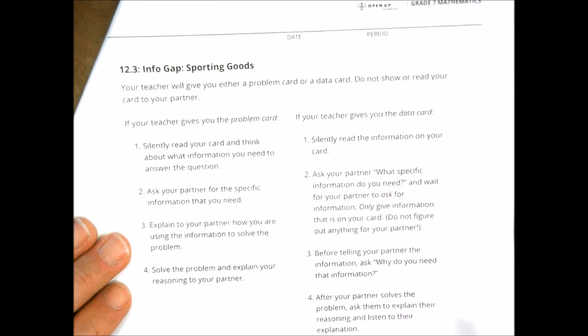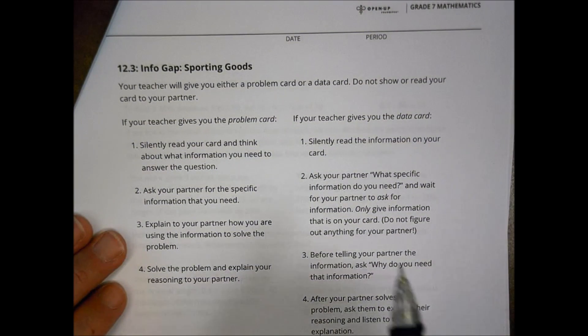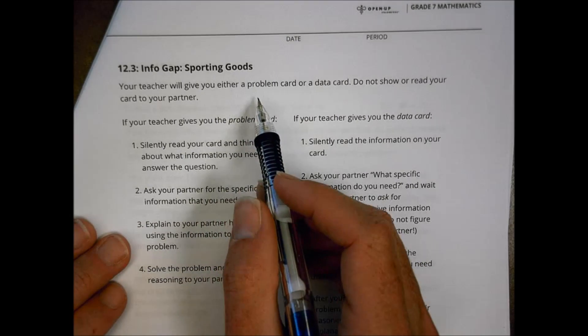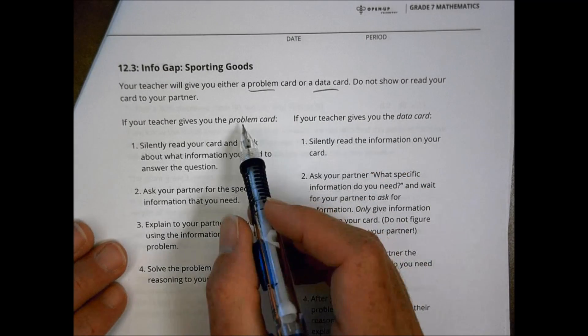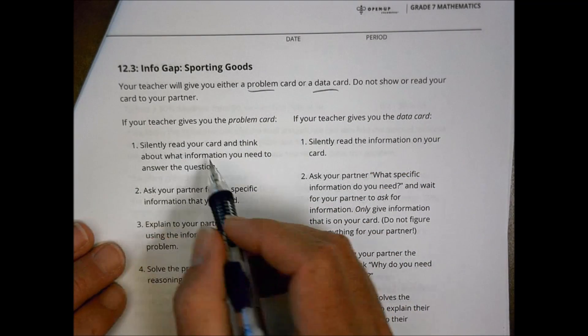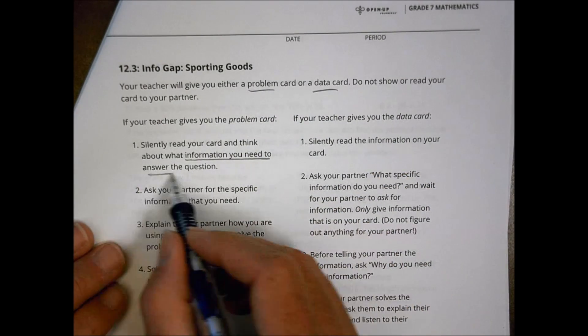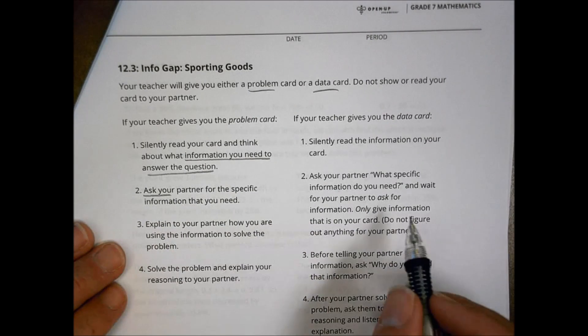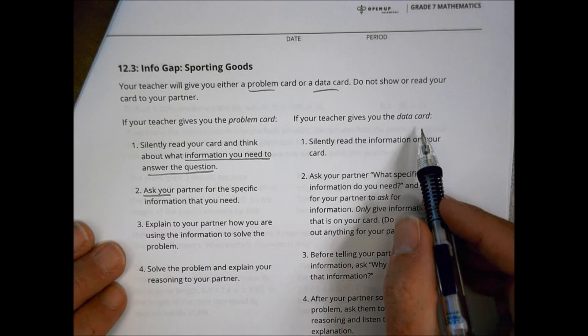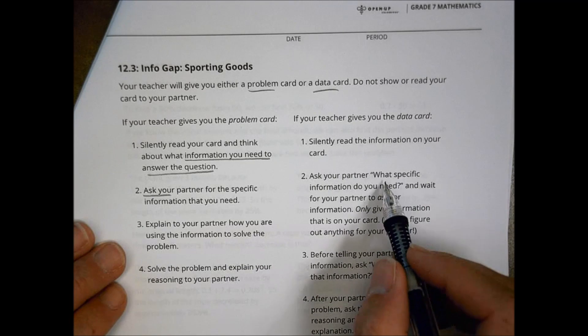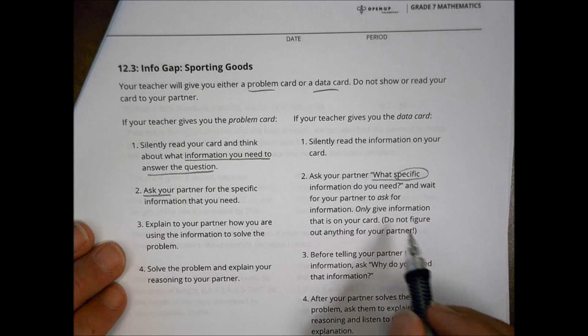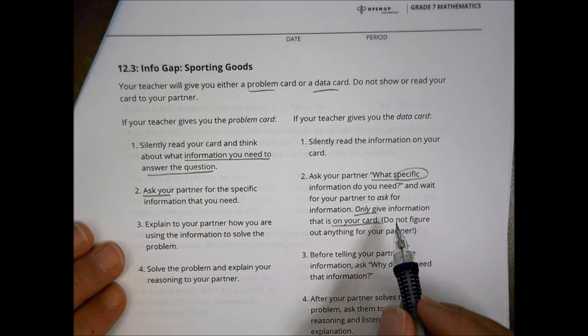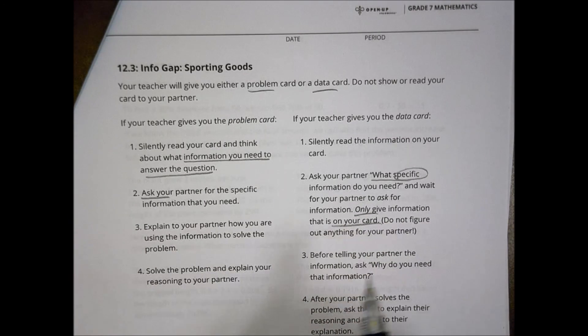The next activity in class you had was on the sporting goods where your teacher gave you either a problem card or a data card. And your job was, if you had a problem card, look at the problem and think about what information you need to answer the question and ask your partner for that information. If you had a data card, then you have to ask them what specifically do they need information about. Just give them what's on the card and nothing extra. Don't go beyond that there.